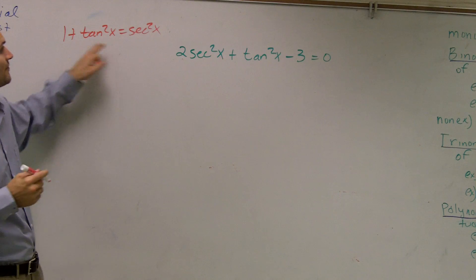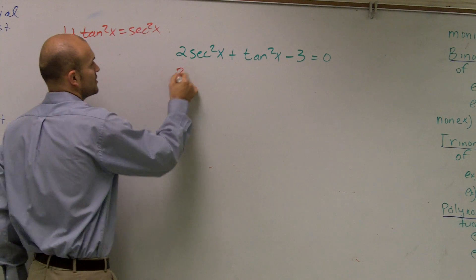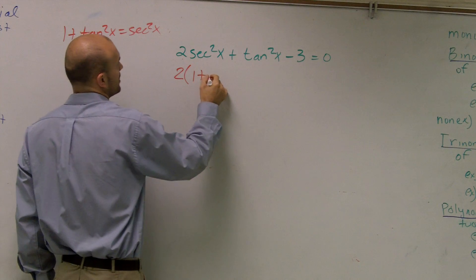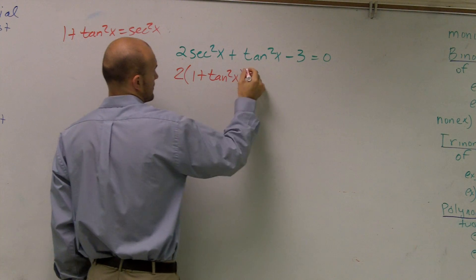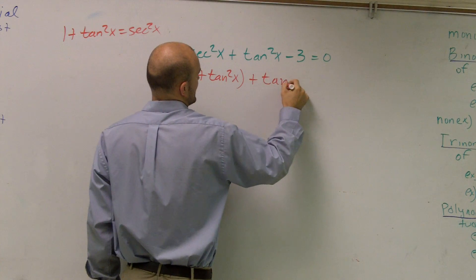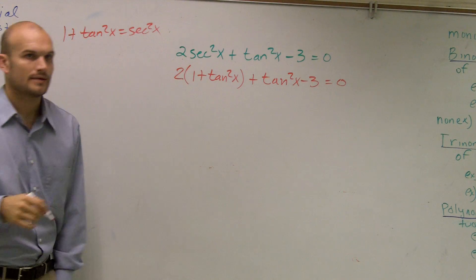So it's already solved for me. So therefore, I'll just plug that in. I'll just plug 1 plus tangent squared in for secant squared. So I have 2 times 1 plus tangent squared of x plus tangent squared of x minus 3 equals 0.